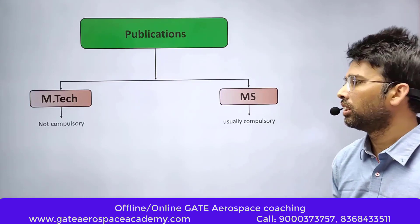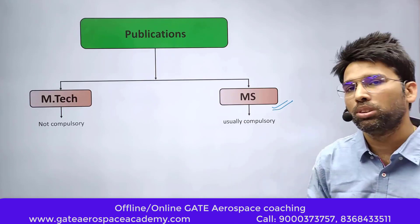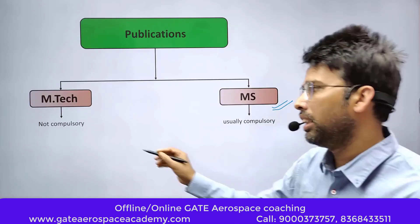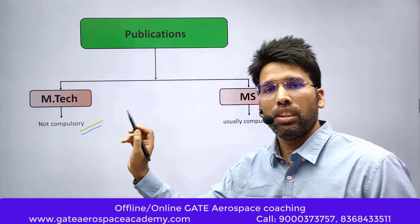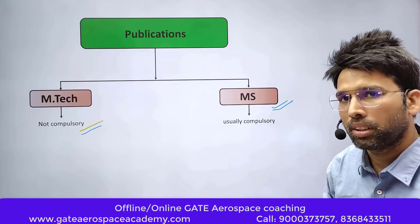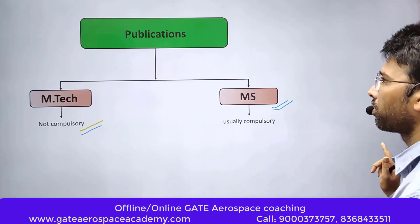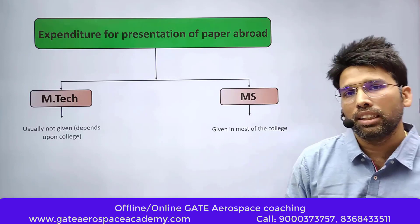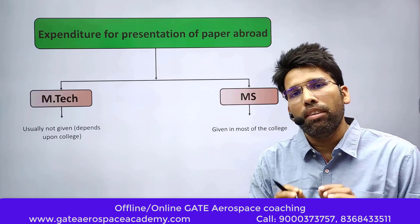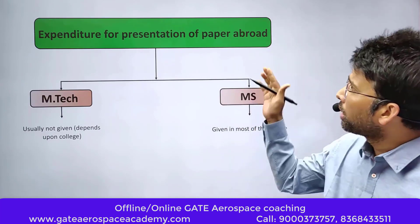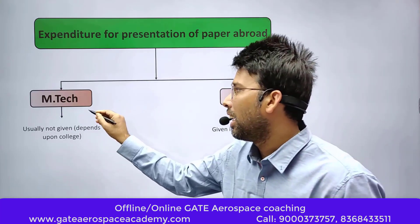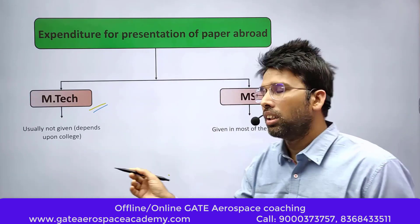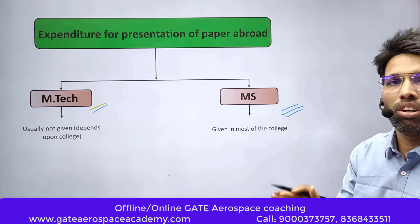Next is publication. To get the MS degree, publication is usually required — it is compulsory in most colleges. Whereas for M.Tech, it is not compulsory; you can get your M.Tech degree even without publishing a paper. Additionally, once you publish a paper and present it abroad, a few institutes bear the expenses. For example, at IIT Chennai, they used to give around ₹1.5 lakhs to MS candidates to present papers abroad, but that was not given for M.Tech. It depends upon the college.